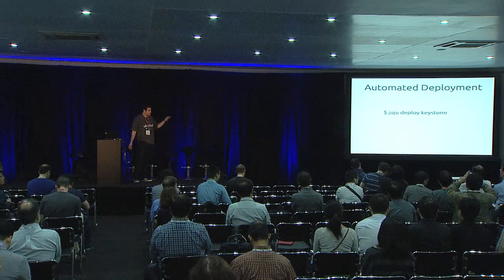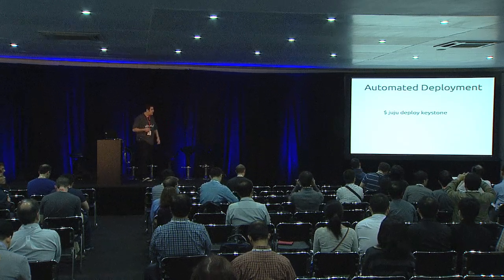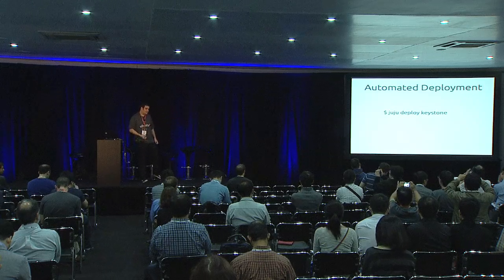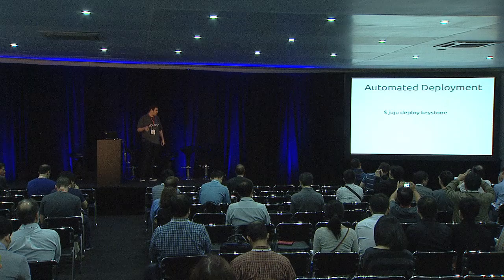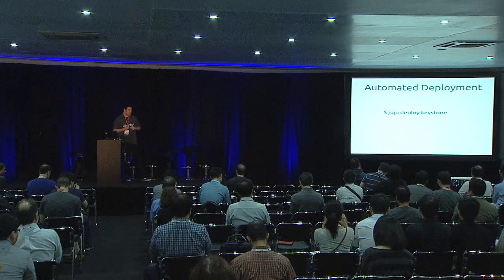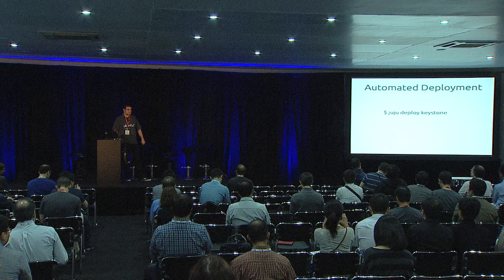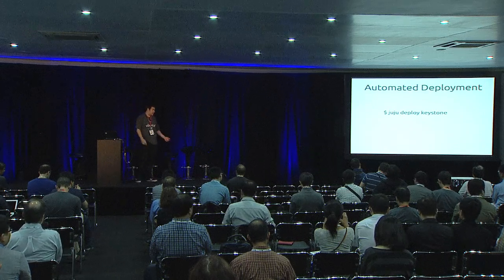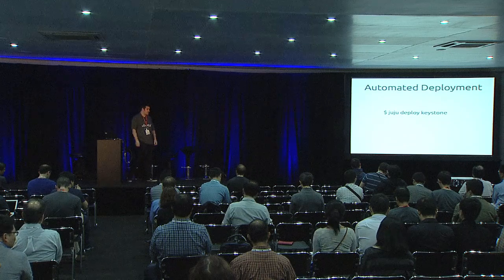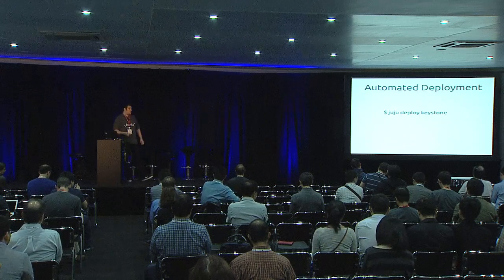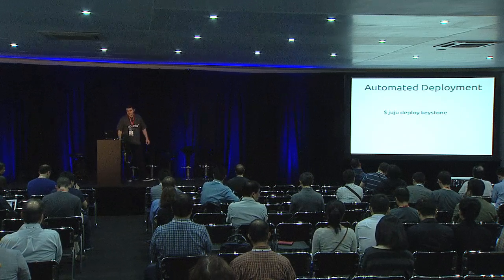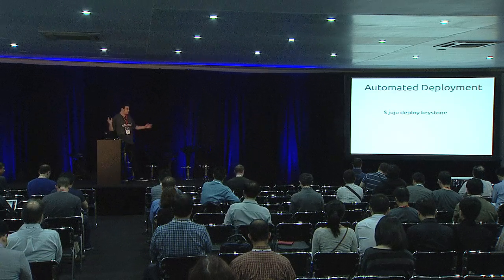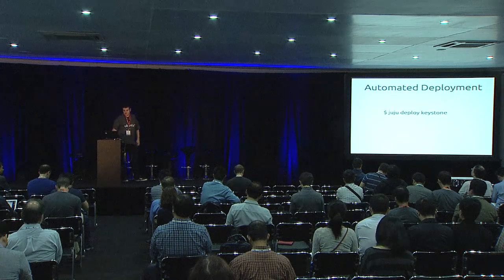We try with Juju to take these long deployment manuals and condense them into simple commands. Everything you would read in the first five or six pages of the Havana Keystone documentation can be summed up in: juju deploy keystone. One analogy people like to make is apt-get — you no longer go to a website, download source, run configure and make. You do apt-get install chromium-browser or apt-get install LibreOffice. The same is true of Juju; we're applying that analogy to services running outside of your system.